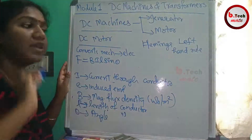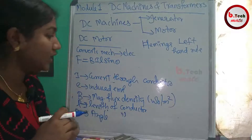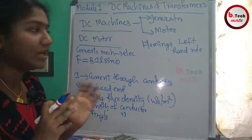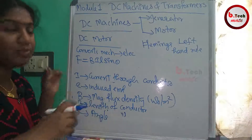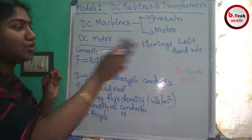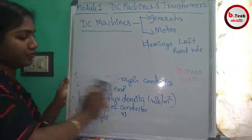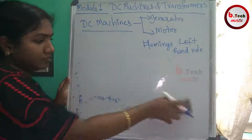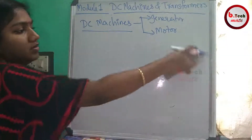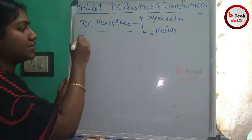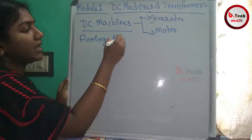The direction of force in the DC motor is determined by Fleming's Left Hand Rule. Fleming's Right Hand Rule applies to the DC generator, and Fleming's Left Hand Rule applies to the DC motor. These are the basic Fleming's rules used for direction.